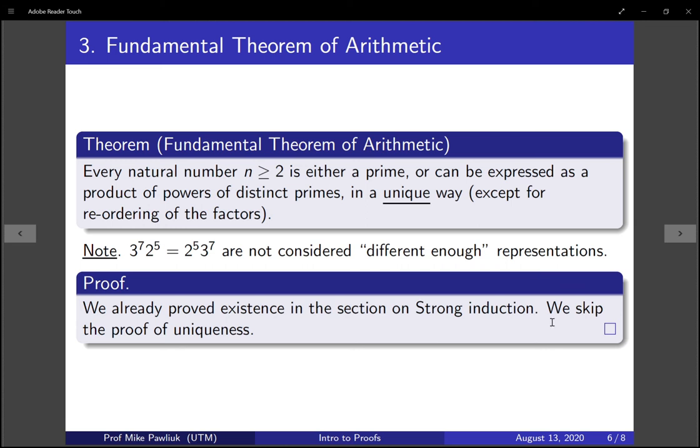The proof of this is we've already seen half of it. So, we proved existence, that every number has a prime decomposition. We proved that in the section on strong induction. We're going to skip the proof of uniqueness. You can look it up if you want. It's mostly just a nightmare of indices and subscripts, but it's not a deep result. It sort of is what you'd expect it to be.